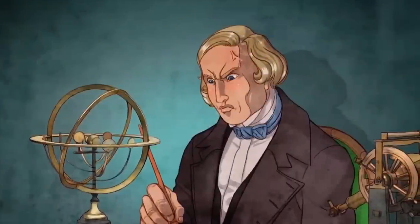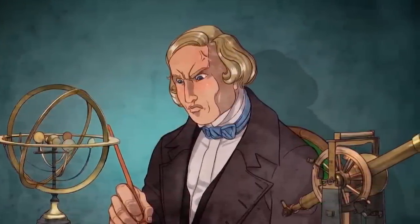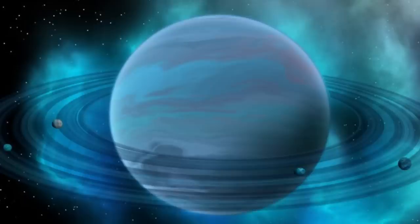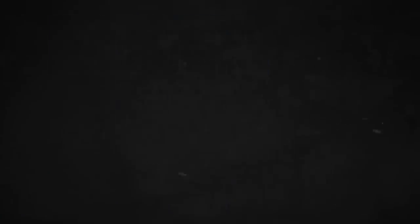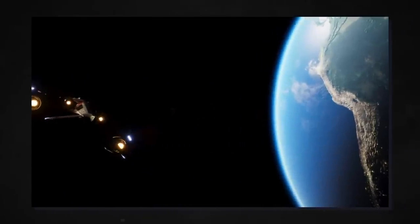Scientists believe that due to Neptune's rather massive size, the planet would have a very large core. Neptune is estimated to possess a core of about one to one and a half Earth masses, with temperatures reaching 13,000 degrees Fahrenheit and pressures estimated at several million bars.